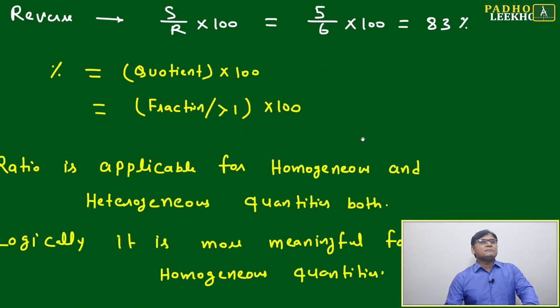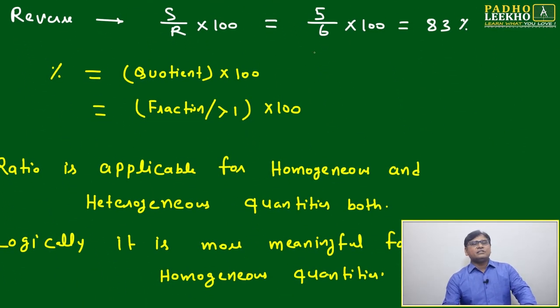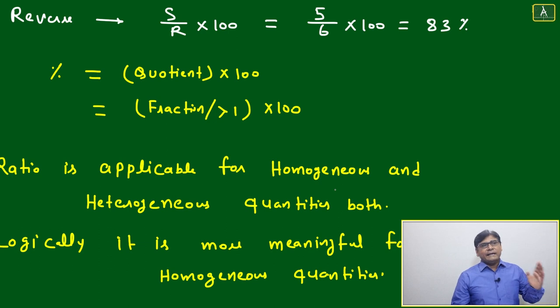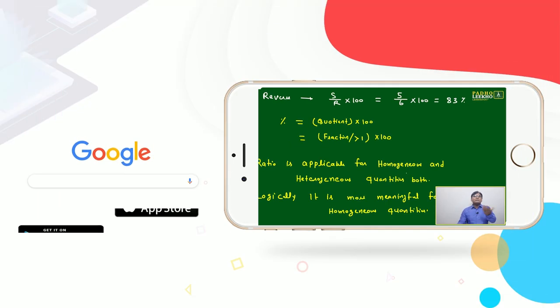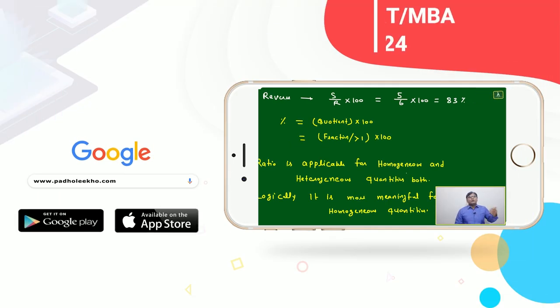Just reverse: S by R into 100. Just reverse means Soham salary is how much less than Ramesh salary. If one is more, another will be less. Here Ramesh salary is more than Soham, then Soham salary will be less than Ramesh. Then Soham by Ramesh equals 5 by 6 into 100, you will become 83 percent.